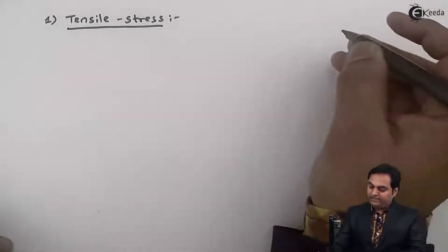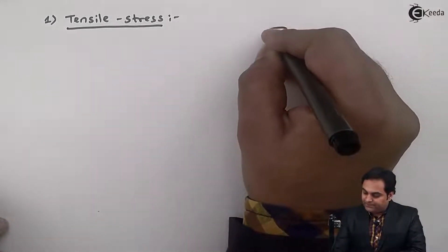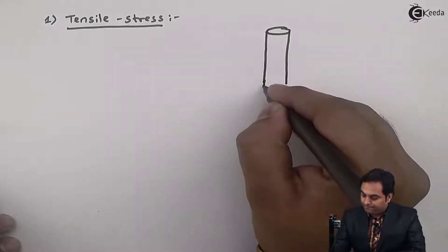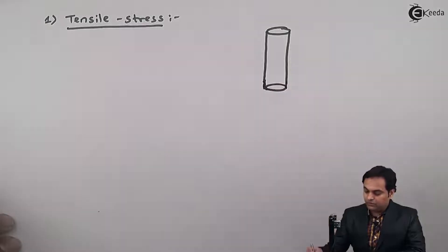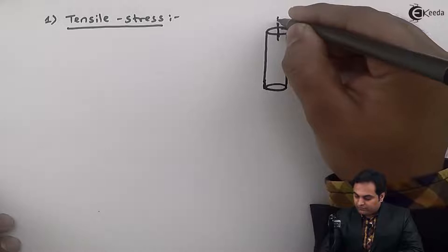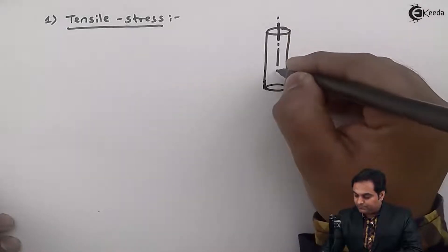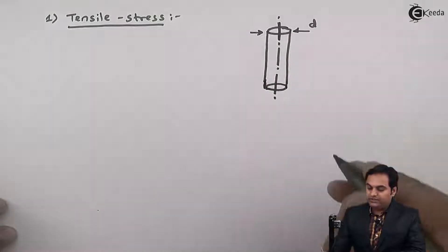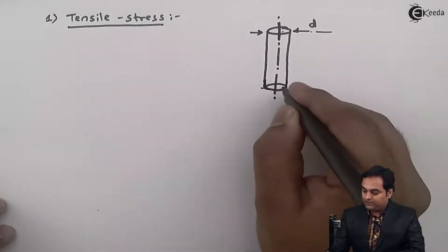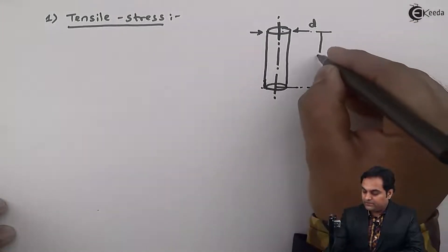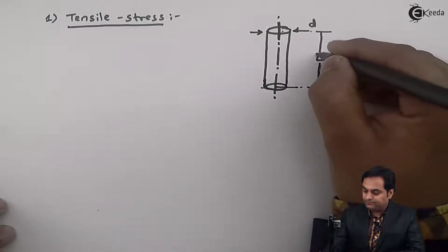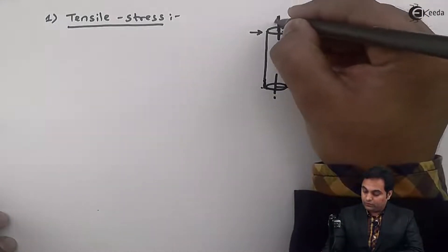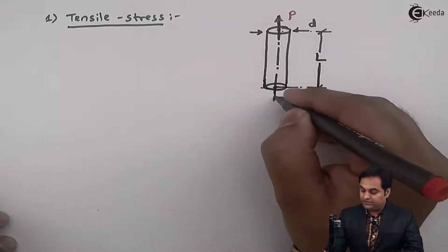For tensile stress, I'll draw a diagram. Here I am drawing a rod with the axis of the rod, where D is the diameter of the rod and its length is L. Now when I am applying a load in the upward direction and another load in the downward direction...